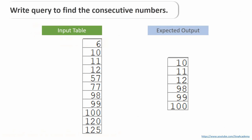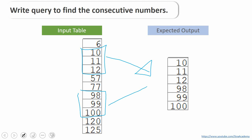The question is: we have a list of numbers available in a table and we need to write a query to find whether the numbers are continuous or not, or we need to write a query to print the numbers that are continuous. For example, a number is continuous if it has either its immediate previous number or the next number available in the sequence. For example, 10, 11, 12 are continuous; similarly, 98, 99, and 100 are continuous. So we need to write a query which prints 10, 11, 12 and 98, 99, 100.